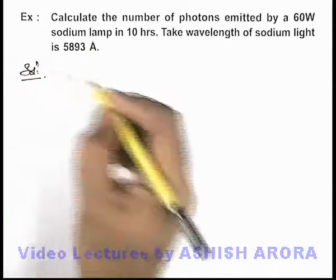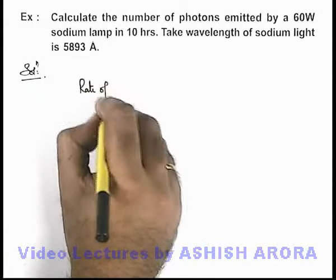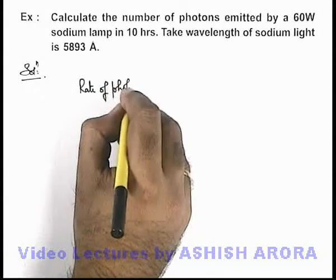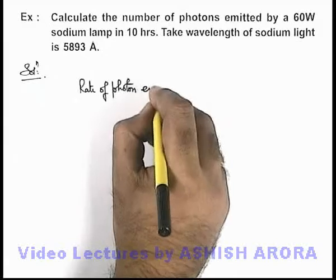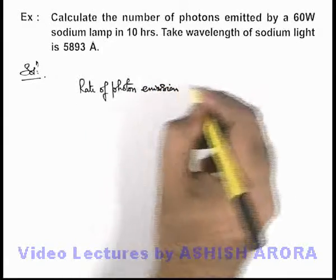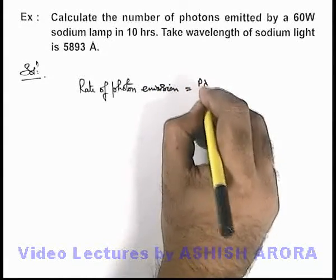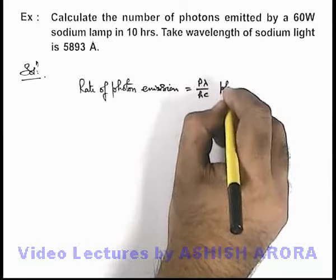In this situation, we know that the rate of photon emission from a given source is directly given as Pλ/hc photons per second.